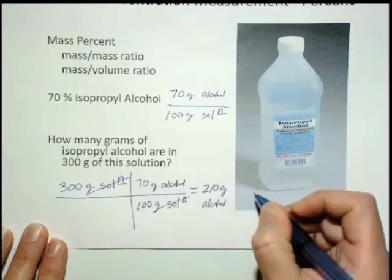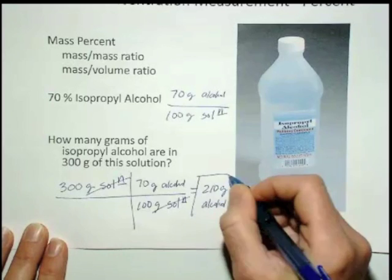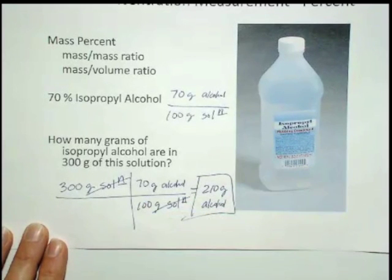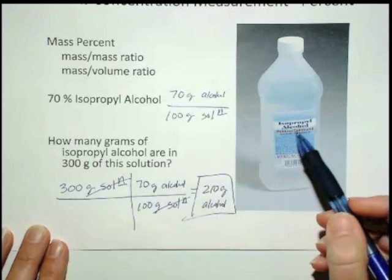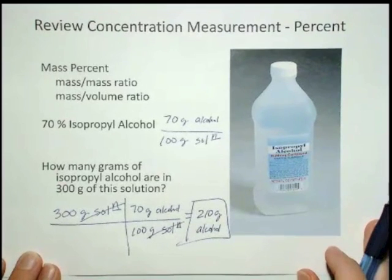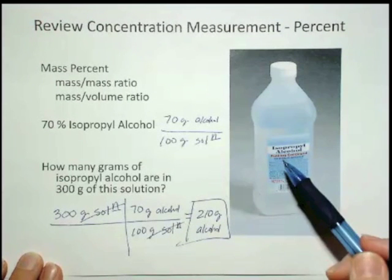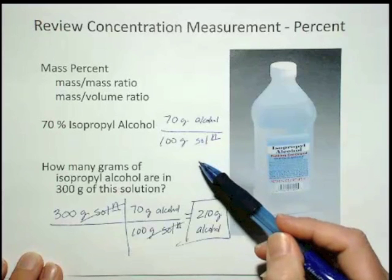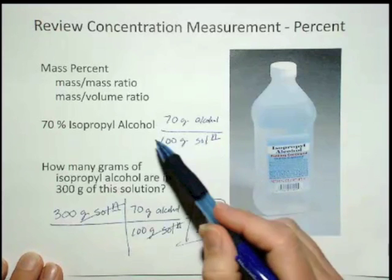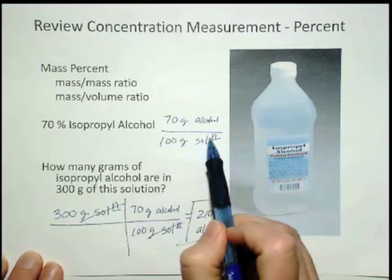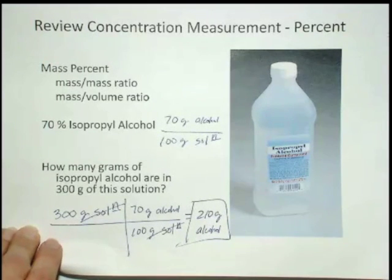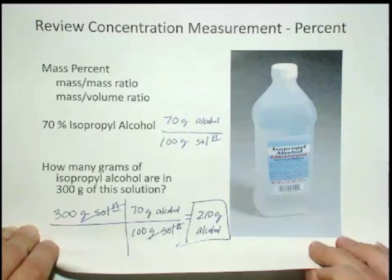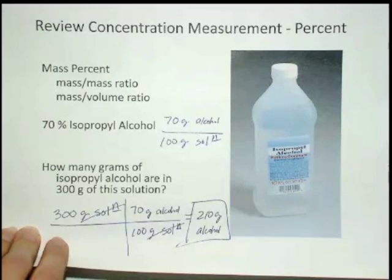In this case, it's 210 grams of isopropyl alcohol in 300 grams of the solution. So that's just a way of representing a concentration of a particular solution when it's a pretty concentrated solution — we use percent. That's what it means, and this is how we can use it in a conversion-type problem to get detailed information about the solute in that particular solution.